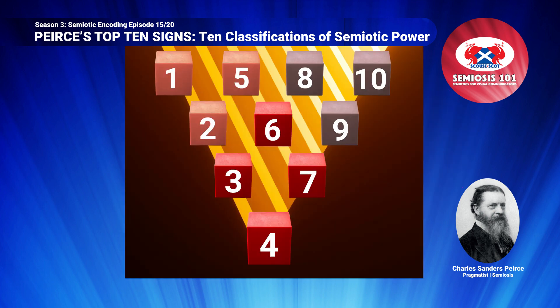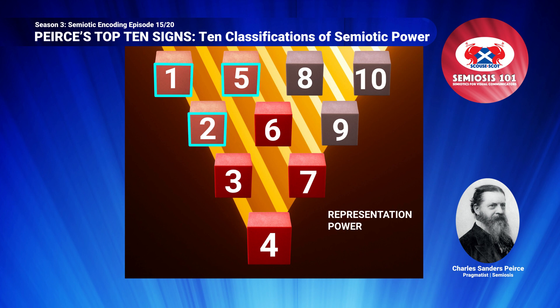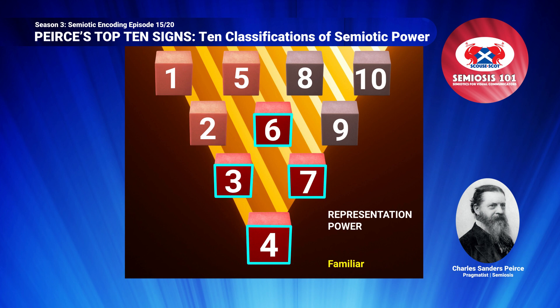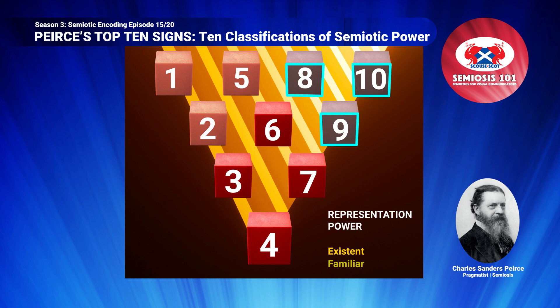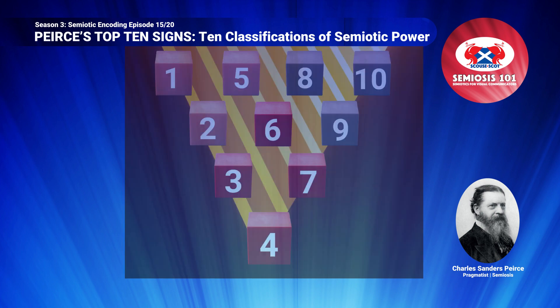Returning to Peirce's inverted pyramid of ten semiotic sign classes, we can now outline the representation power of communicating the concept. We can see that classes one, two and five are grouped in a smaller top left section of the pyramid. These each have a familiar semiotic representation power level. Under this power level, the larger grouping is at the bottom of the pyramid, grouping signs three, four, six and seven with representation power of existence. A smaller grouping in the top right-hand corner of eight, nine and ten have the representation power of proxy.